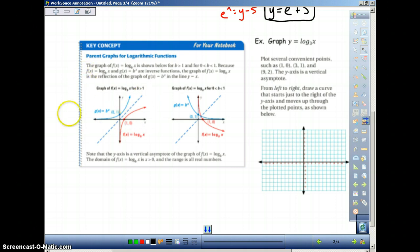So here, if you look at this graph, this is when our base b is greater than 1, so like 2, 3, 4, 5, things like that. And then this graph over here is when b is between 0 and 1, in other words, a fraction or a decimal that is less than 1.